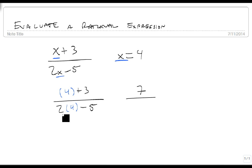4 plus 3 is 7. On bottom, 2 times 4 is 8 minus 5, and 8 minus 5 is 3, so my answer is 7 thirds. This expression equals 7 thirds when x is 4.